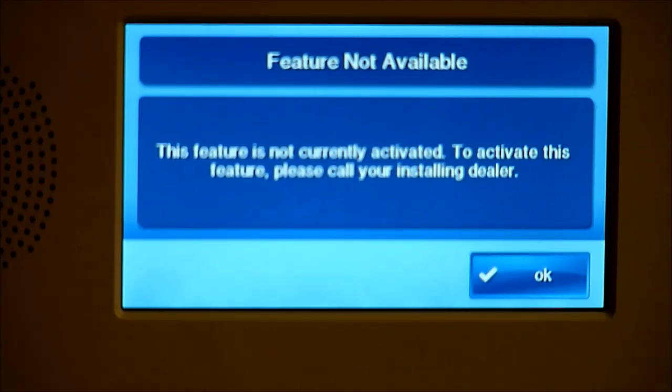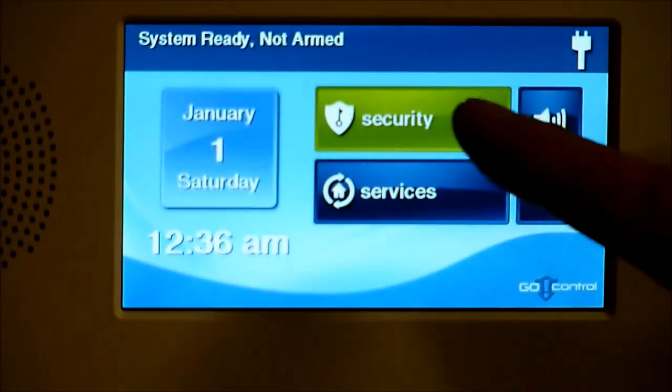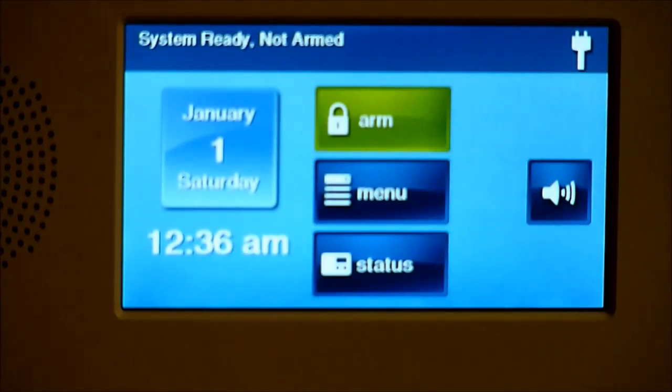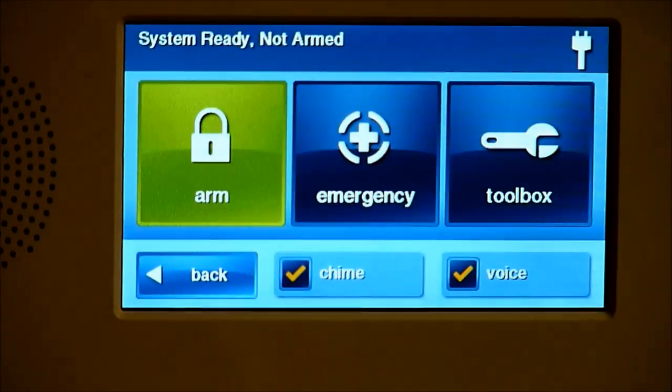We need to go into programming and not only enable the Z-Wave feature but also enable the different home automation devices we would like to learn in. So to do that, we want to go ahead and hit Security, we want to hit Menu, and then Toolbox.